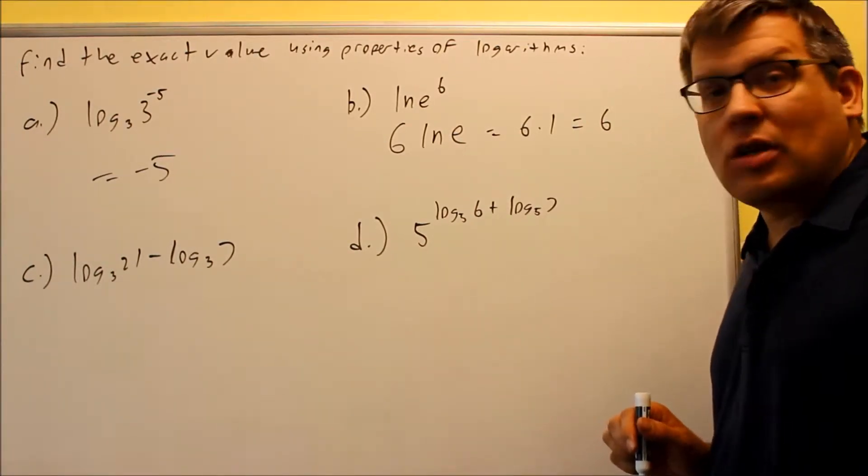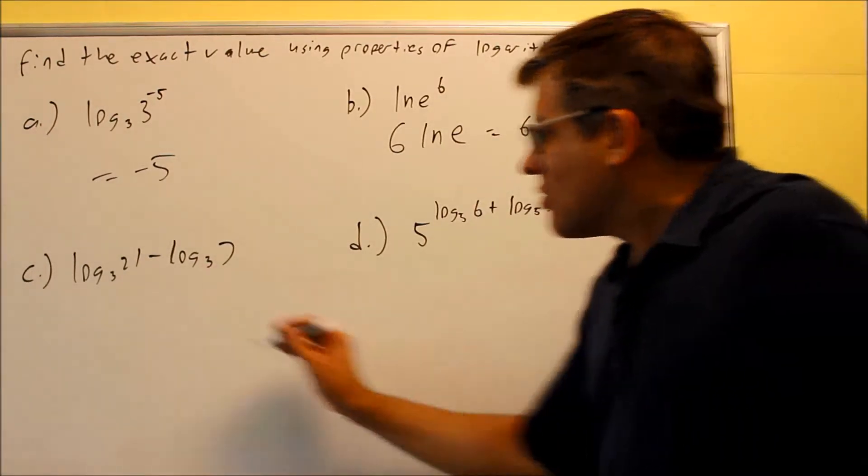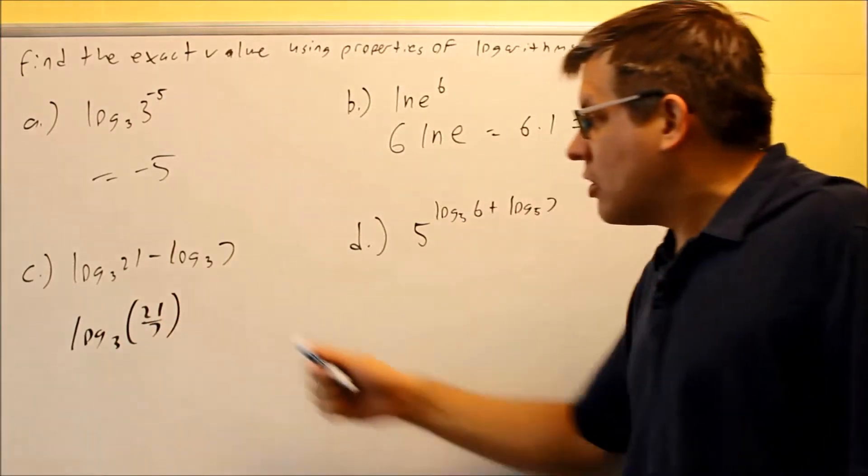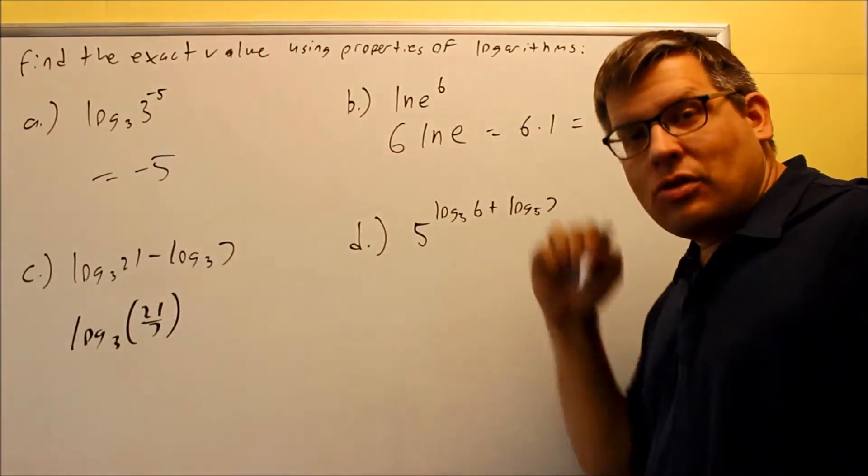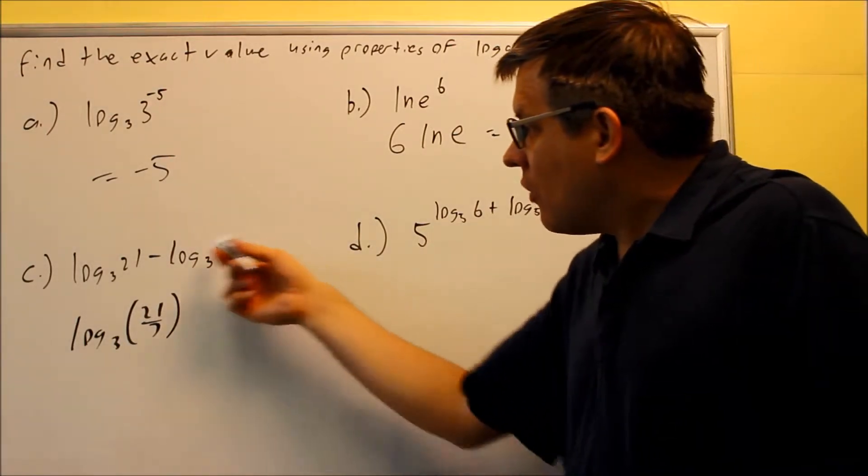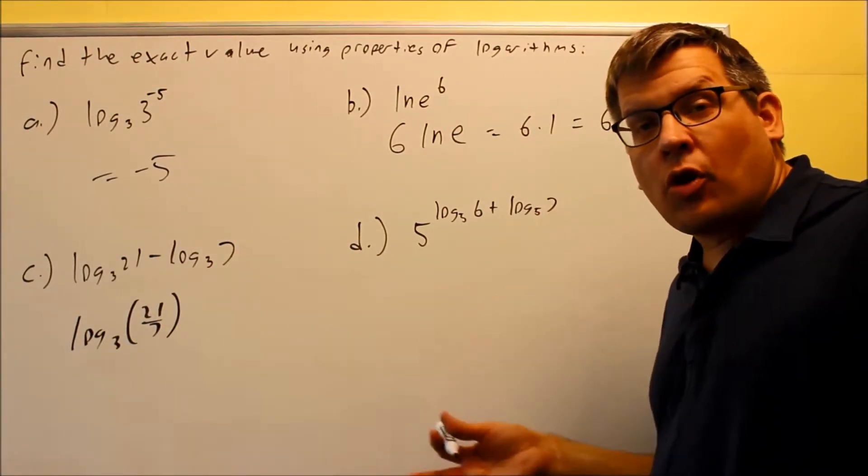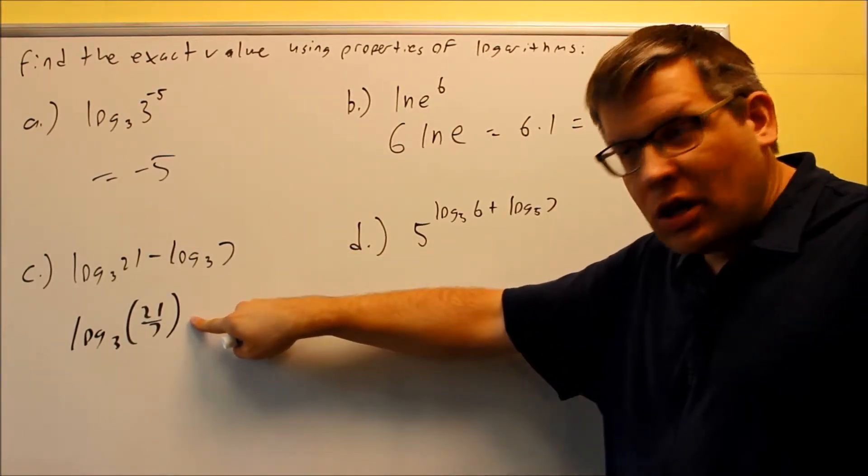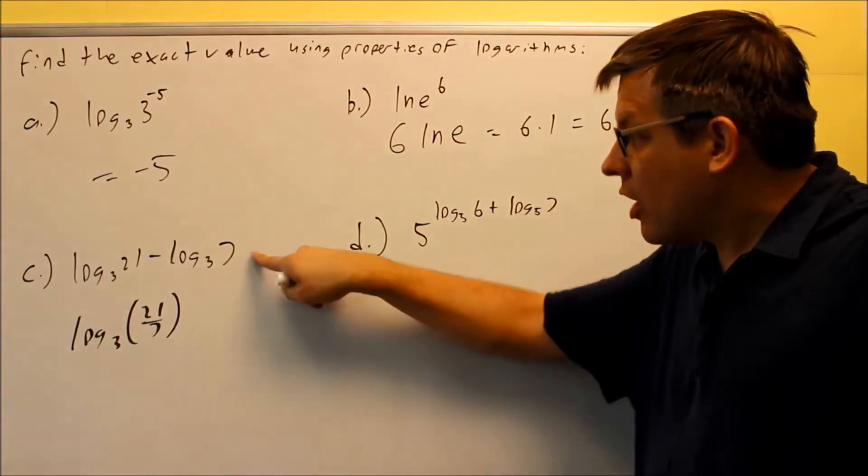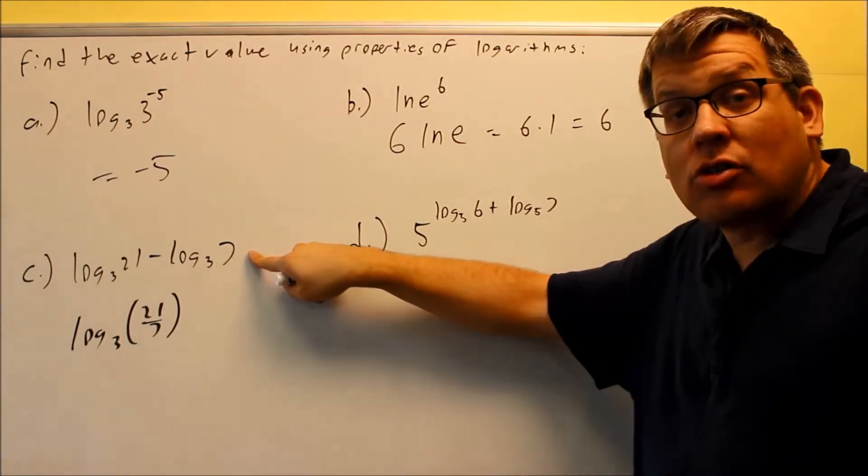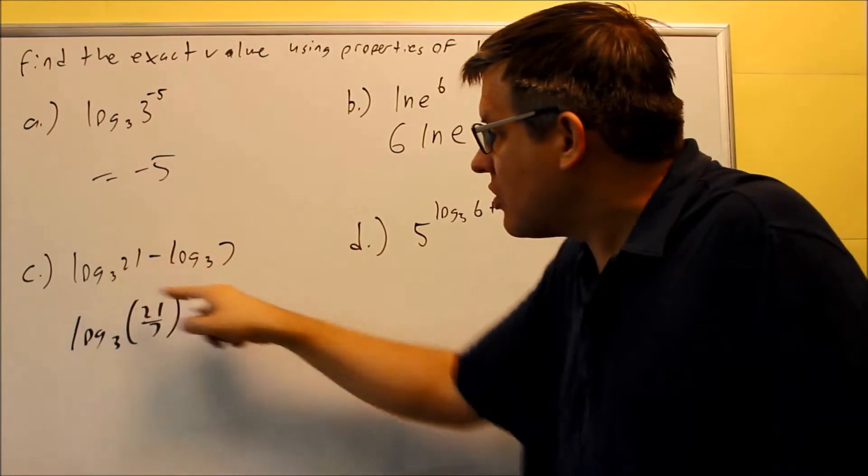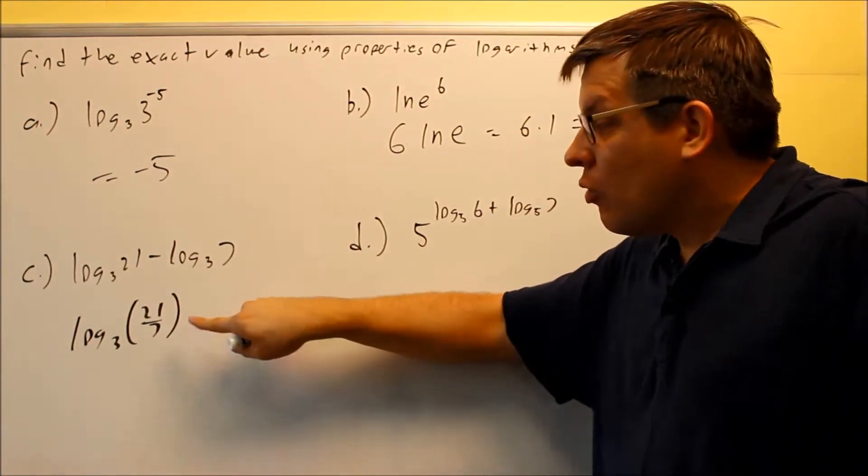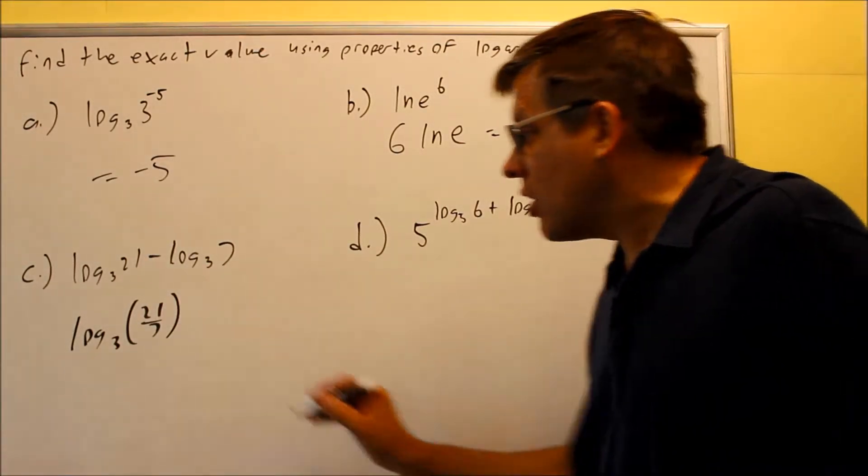If we look at part C, that's going to be using rule number 7. We're going to do log 3, that's 21 over 7. We're going to change the subtraction sign into division. For rule number 7, we are allowed to go both directions. We can either start with it on this side and put it into a single log, or we can have a single log and break it up into two logs. In our case, we wanted to take it from two logs into a single one, so we have it as a division. We're not done yet, we want to keep going.